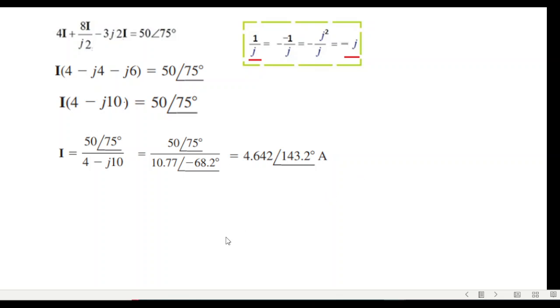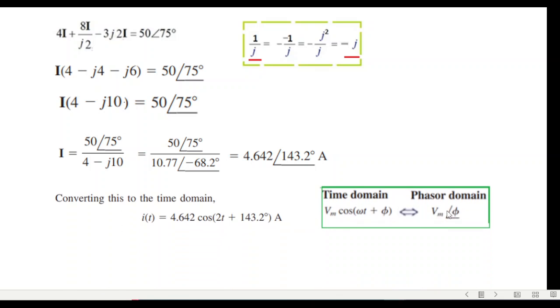Converting this to the time domain. In time domain, I get the final answer: i(t) equals 4.642 cos(2t plus 143.2 degrees) amperes.